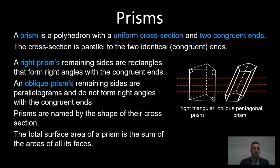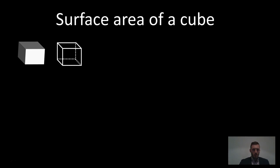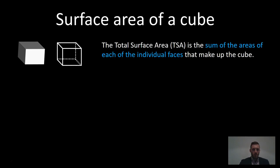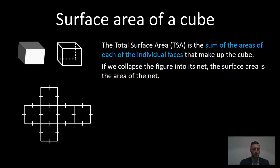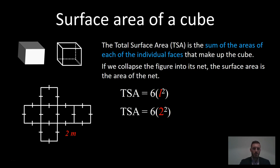The total surface area is usually the sum of the area of all of the faces. Let's have a look at an example — here we have a cube. If we collapse a figure into a net, the surface area is the area of the net. You'll notice that the cube's faces are all the same size with equal side lengths. So if we measure that to be two metres each, the total surface area is six times the area of a square, because we've got six faces. Substituting in our known values, the total surface area of this cube is 24 metres squared.